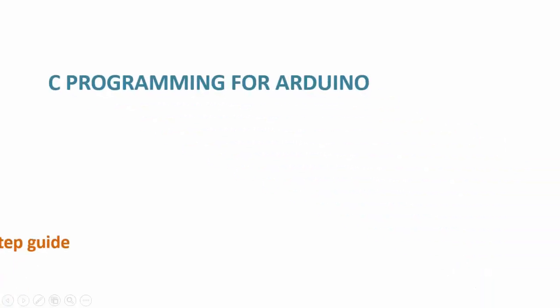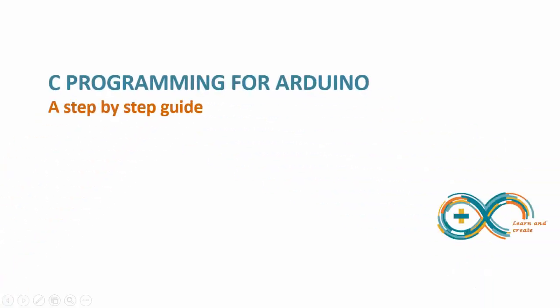Hi and welcome to C programming for Arduino, a step-by-step guide. In the previous video we discussed using the pointer to change the value of a variable. Now let's discuss how it is done.